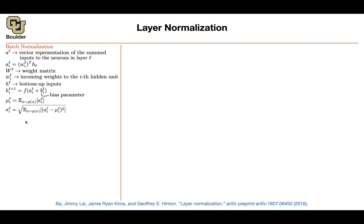You compute those two statistics and then normalize your a^i: subtract the mean, divide by the standard deviation. But if you do that, this term is always going to have mean 0 and standard deviation 1 — so not much learning is going on because the scale of these activities is always 1. To counter that, you introduce learnable scaling parameters g^{iL} (the gain) and a learnable bias term. Mu and sigma are computed; g and the bias are learned. That's batch normalization.